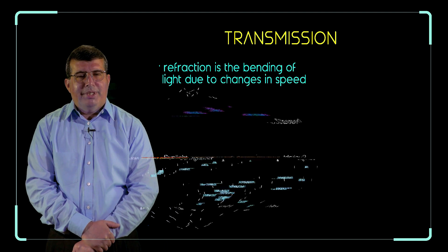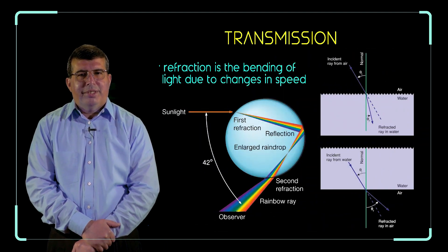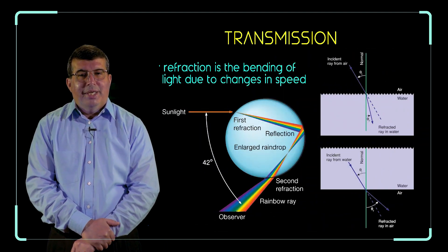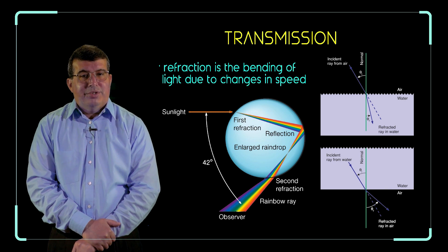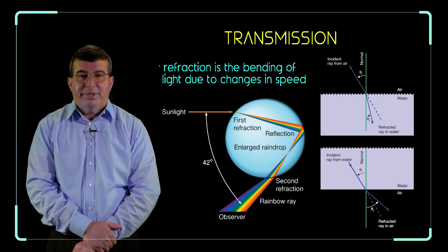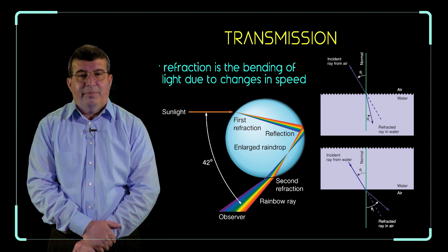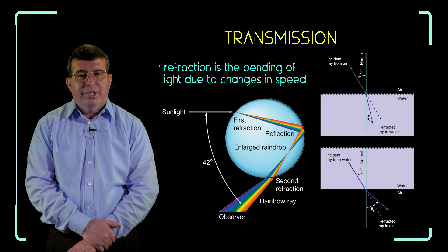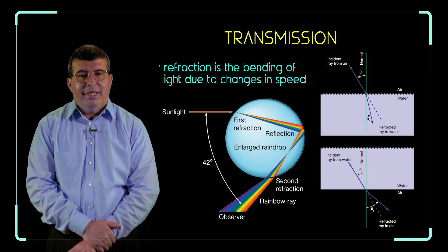Why do we call this the index of refraction? Refraction is the bending of light due to changes in speed. Whenever light changes its speed, it will bend. This usually happens at the boundary between one type of material and another — for example, from air to glass or air to water — where we see a change in the speed of light and the path of the light bends.